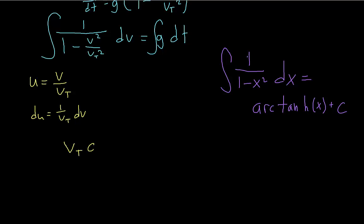So carrying out the integration, we get vt times the inverse hyperbolic tangent of u. And then on the other side, we just have gt plus c.